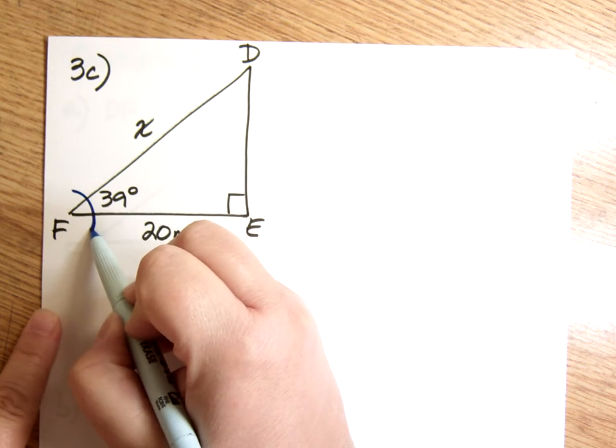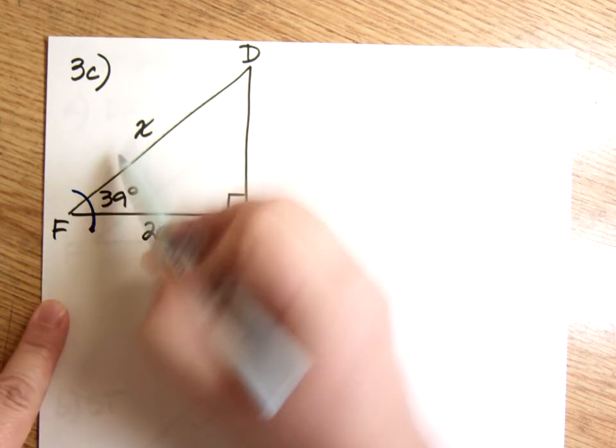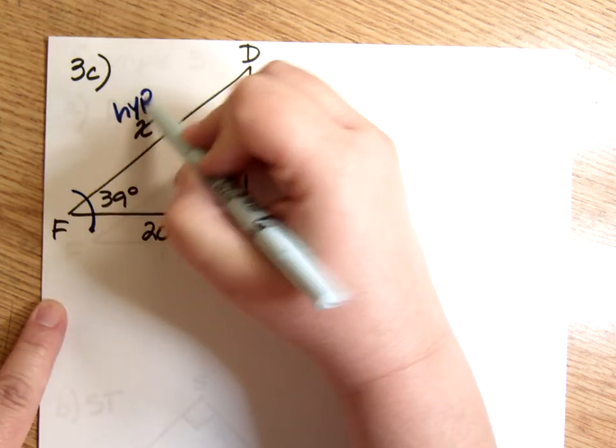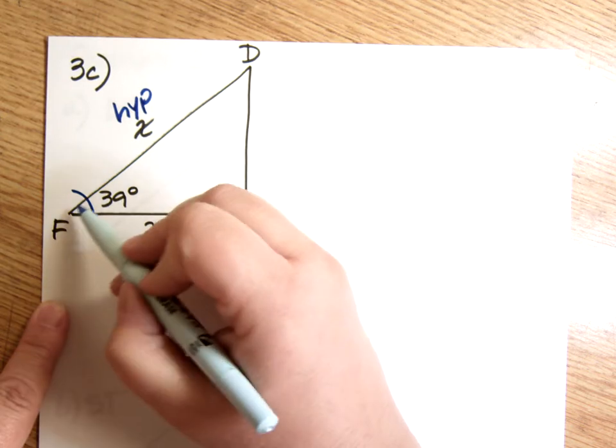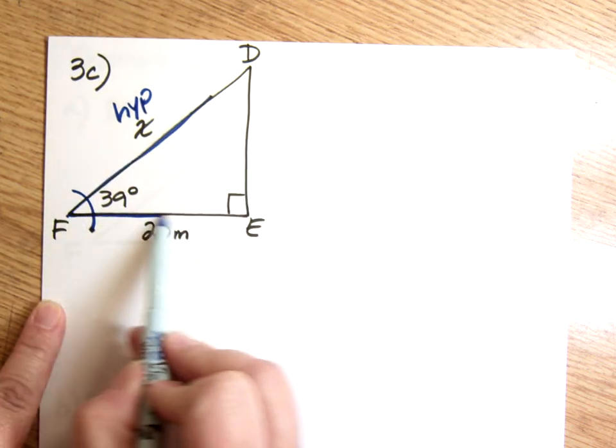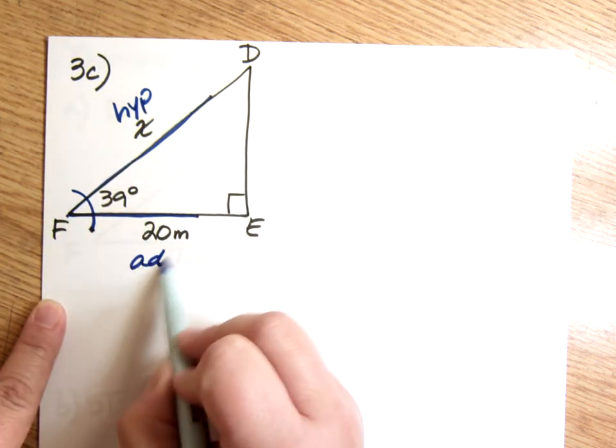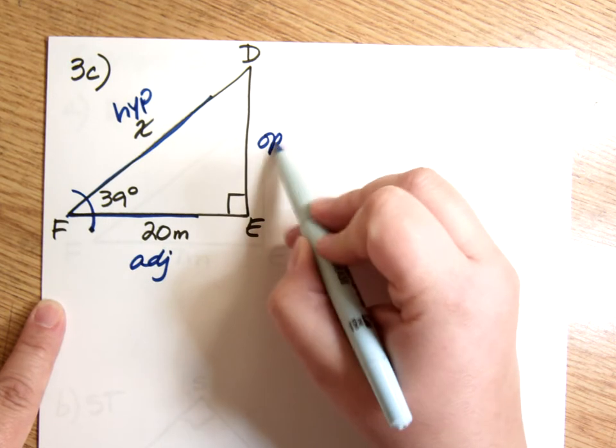So we're going to go from this angle and we're going to label the sides. This is the hypotenuse, so I can always label that first if I want. Then an angle is made up of two sides. One of them is always your hypotenuse and the other one is your adjacent. That makes this the opposite.